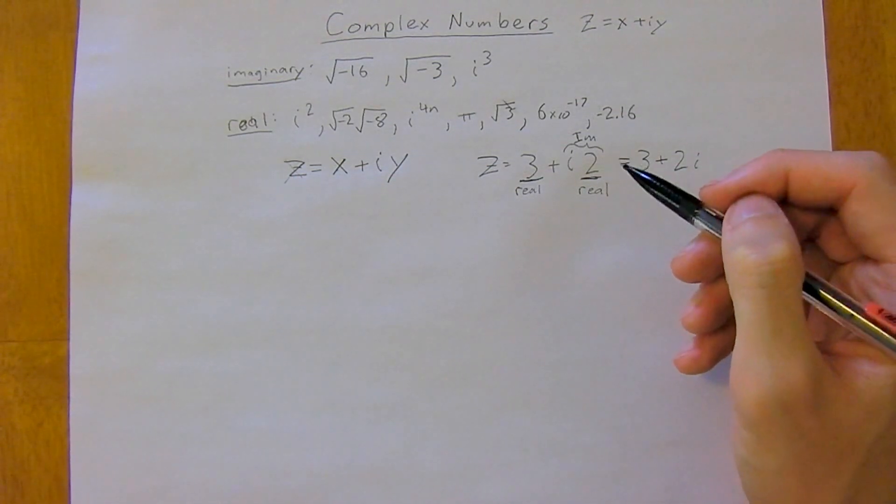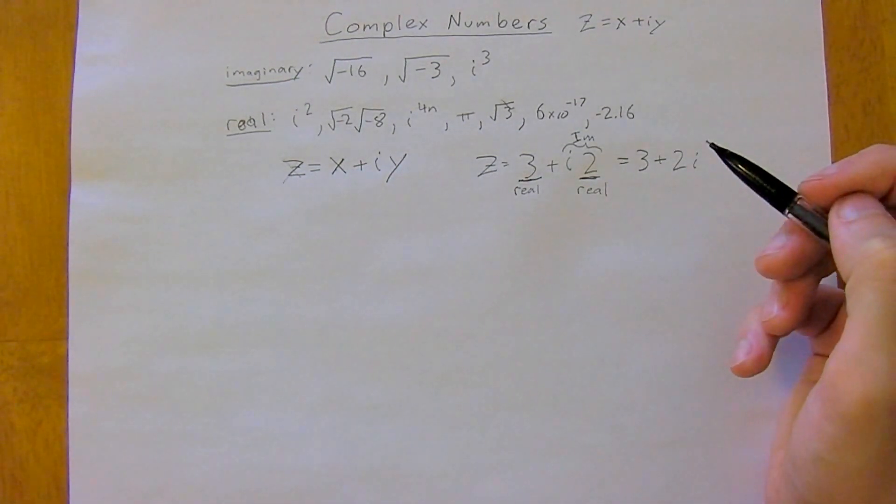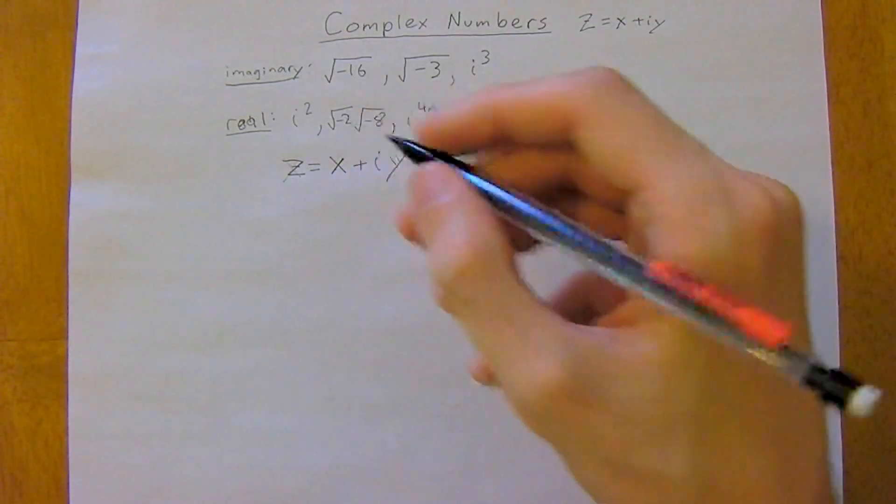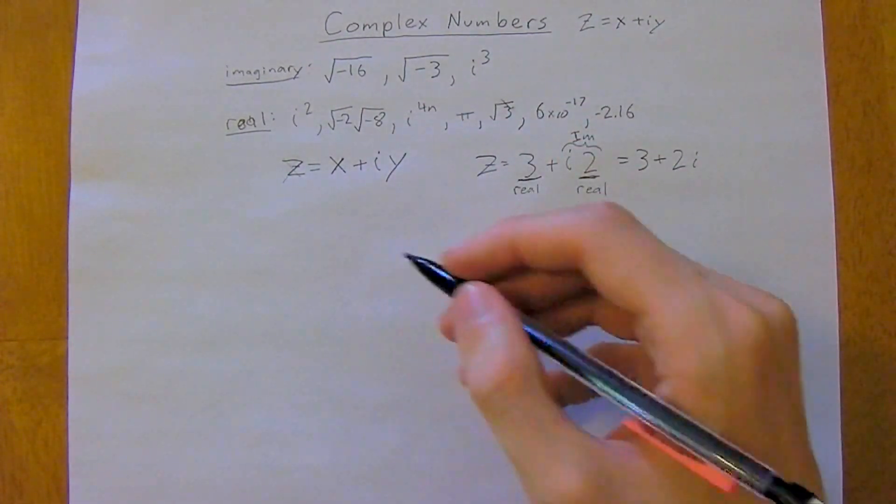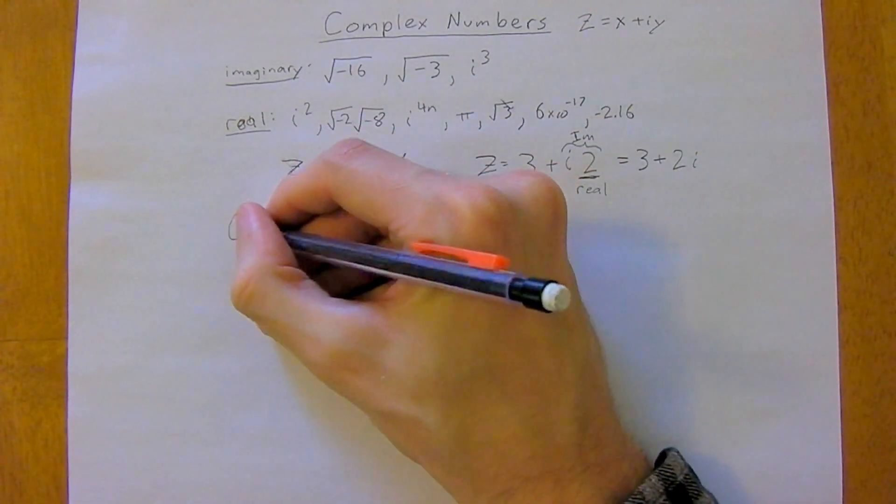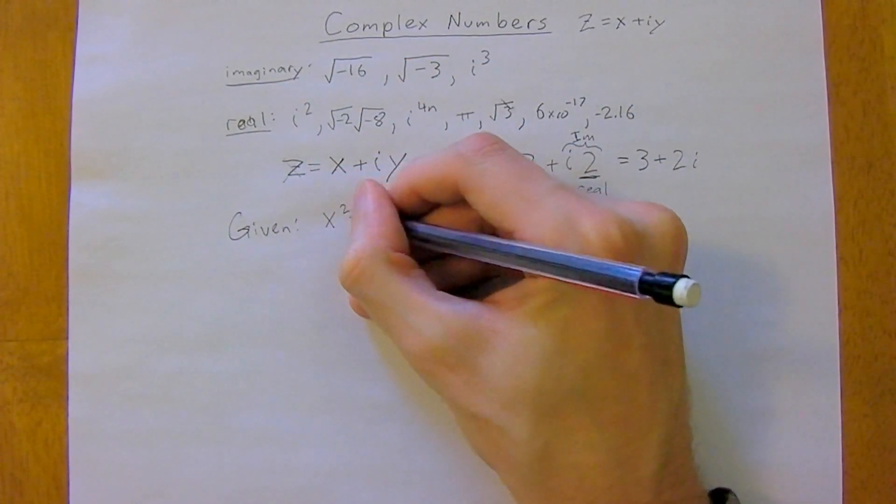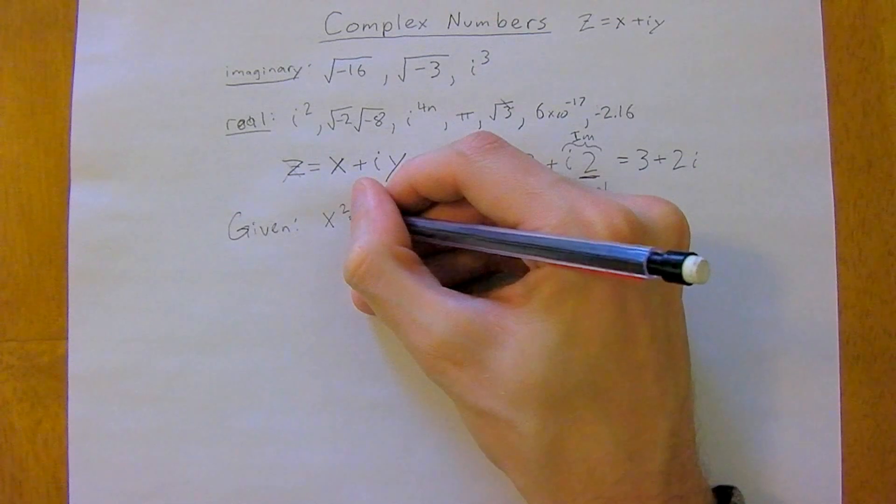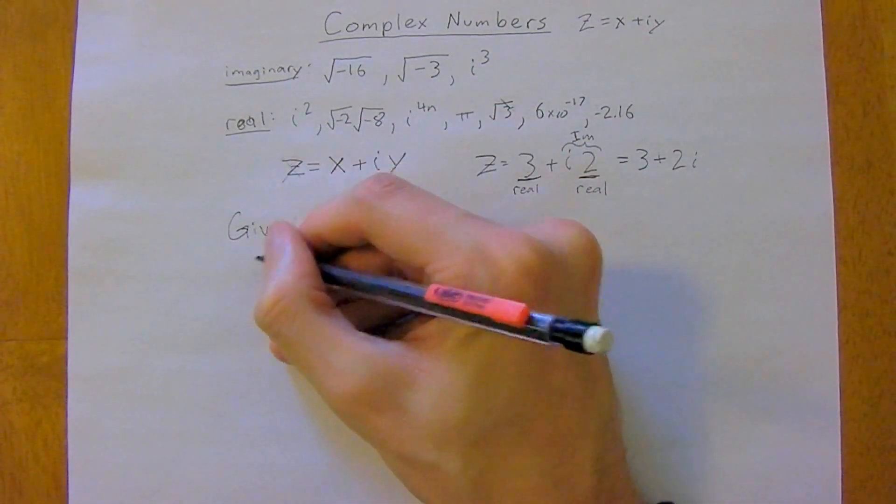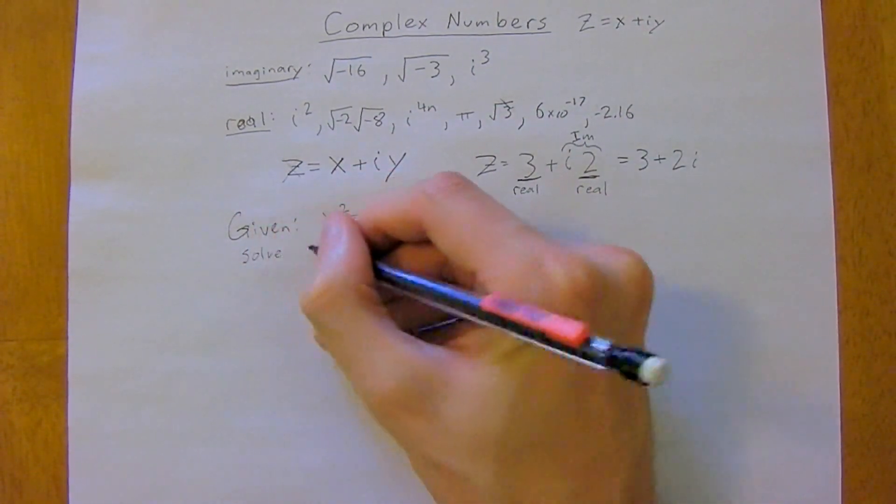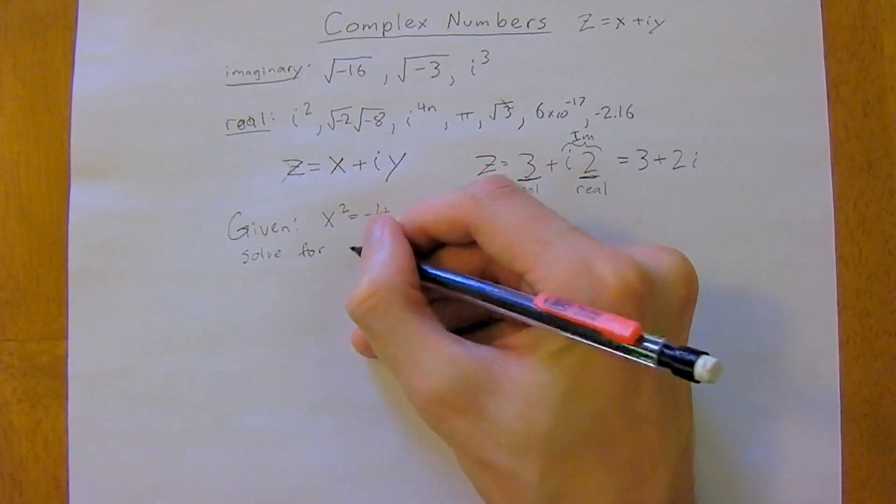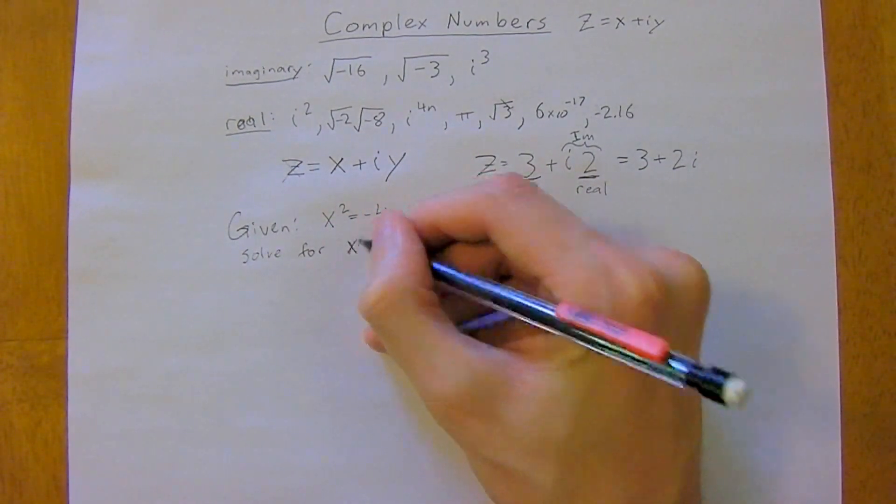So let's do a little example. So you're given x squared equals negative 4 and you want to solve for x.